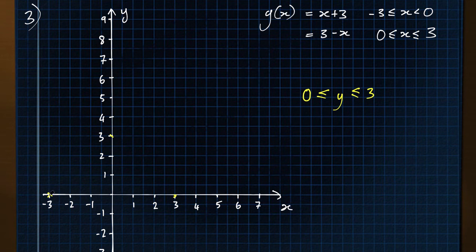When x is minus 3, y equals 0. When x is 0, y equals 3. And the same is true from the other part of the function as well. So we end up with two straight lines crossing the axes at 3 and minus 3.